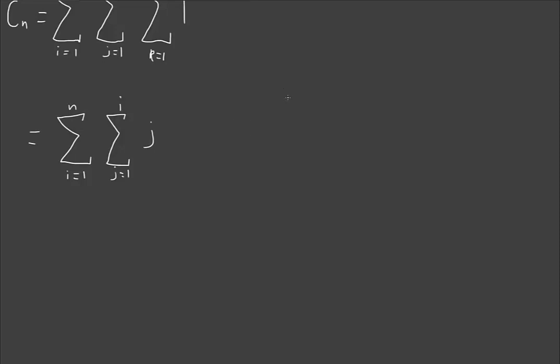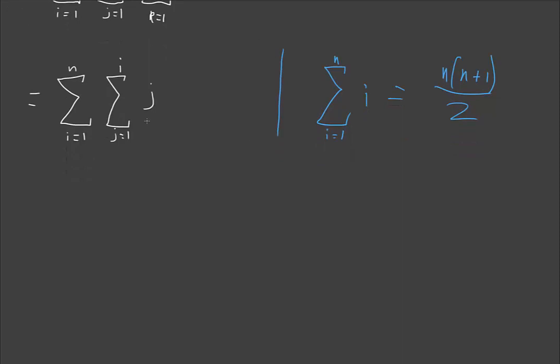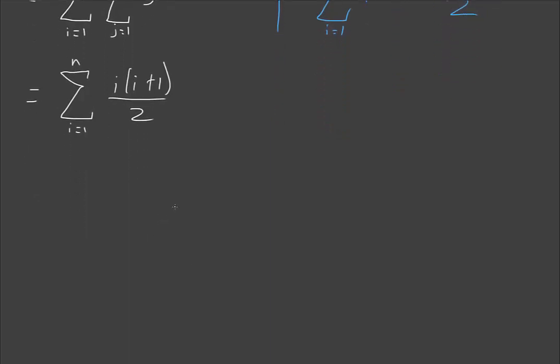Even though it takes a little bit of a different form because it's j not i now, it's the exact same formula. This is using the formula from i equals 1 to n of i equals n outside of n plus 1 on 2. That's one of our classic formulas. So if we jump back and do these relatively logical conversions, we get i equals 1 to n of j times j plus 1 on 2.